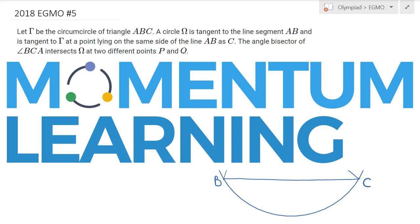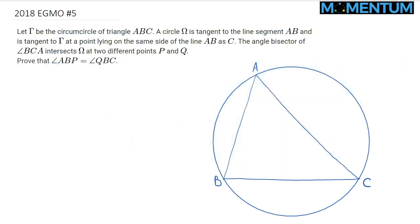This is 2018 EGMO problem number 5. We're given the circumcircle gamma of triangle ABC, and another circle omega which is tangent to the line segment AB and is also tangent to gamma. This tangency point is on the same side of the line AB as C is.